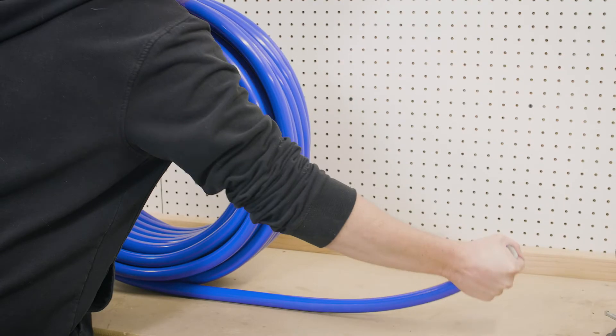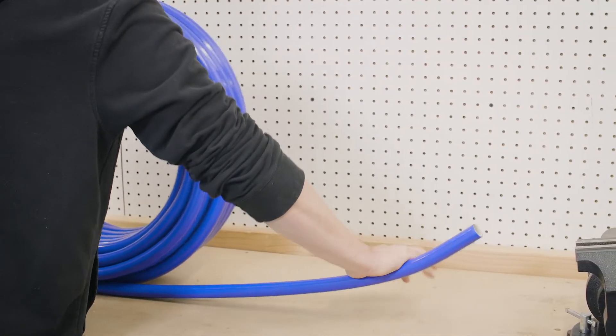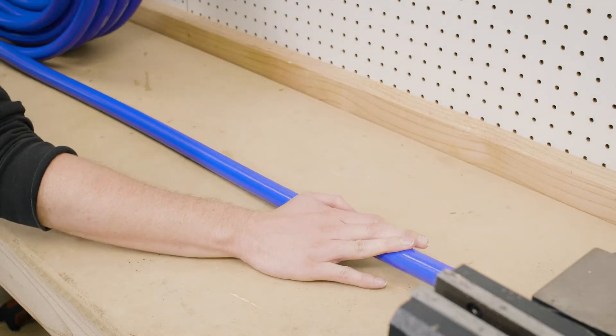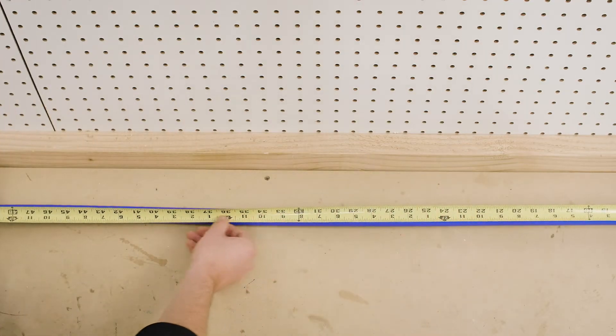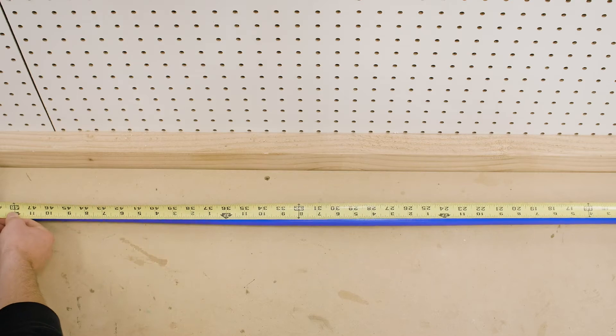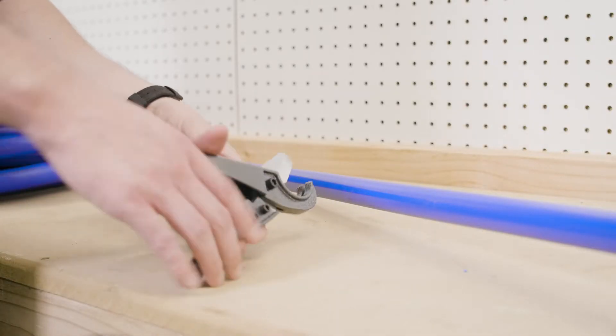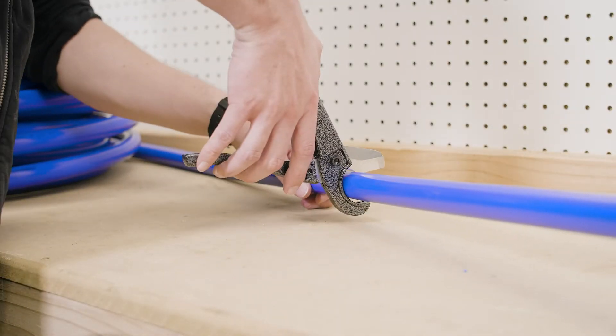Once your layout is planned, straighten out a section of tubing from the coil. It is recommended that you straighten out the section of tubing one to two feet longer than you need. Then cut your first section of tubing to the length you measured for in the planning phase.